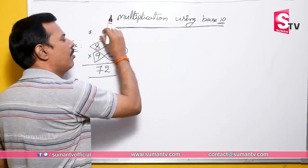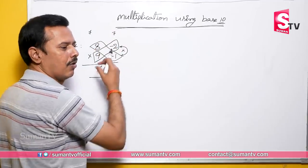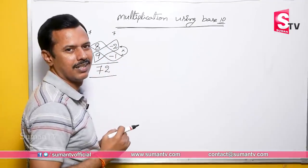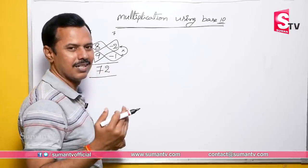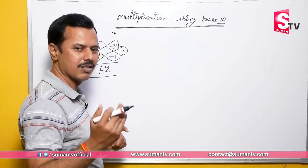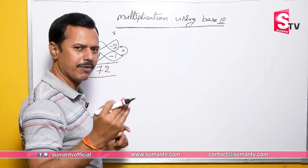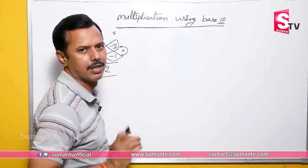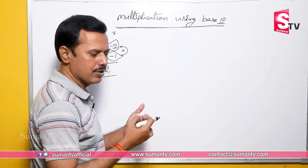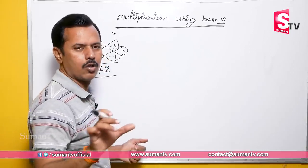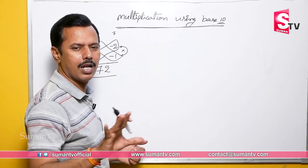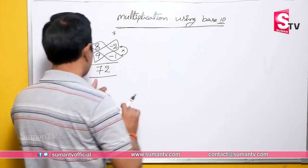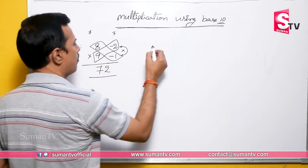One value is more than 10, one value is less than 10 — we'll go through that one by one. If you want to follow any topic, you won't miss any topic. Let me show you an example.